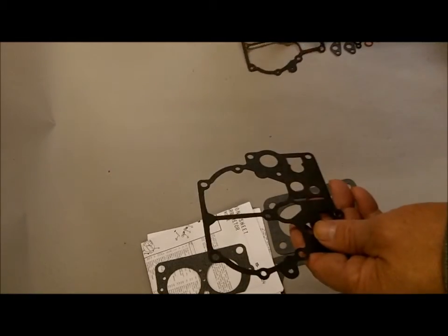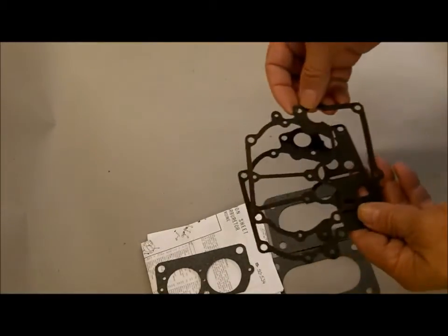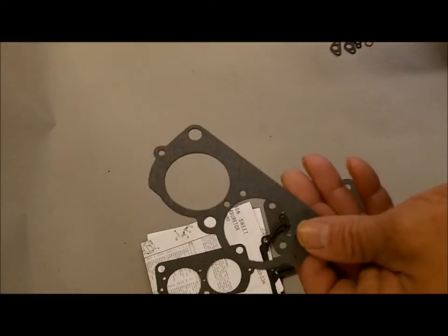Get a choice of two different float bowl gaskets, depending on which one your carburetor needs. Kits often have a few extra parts in it to get better coverage, there's another throttle body gasket.